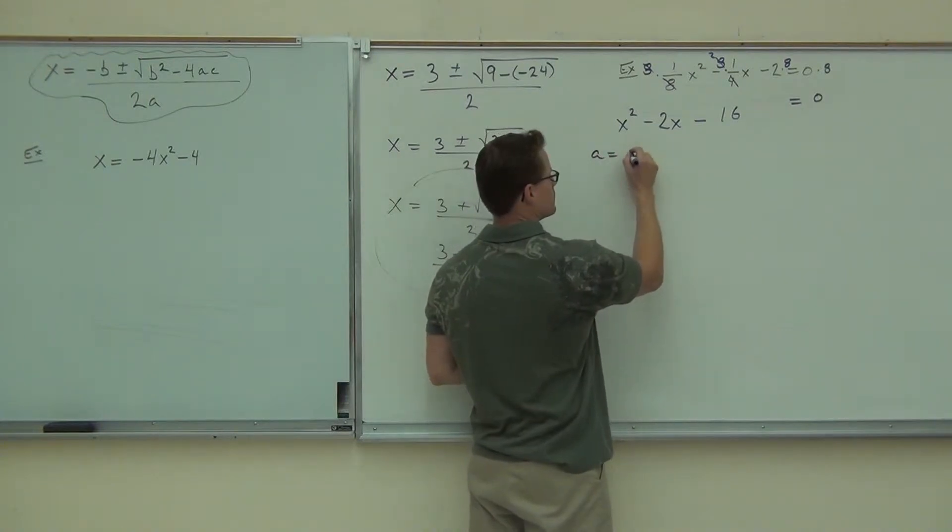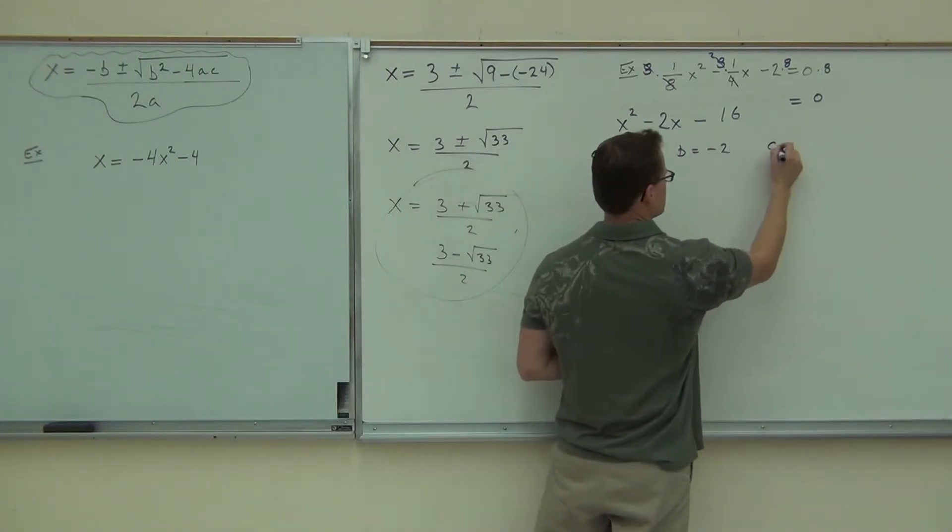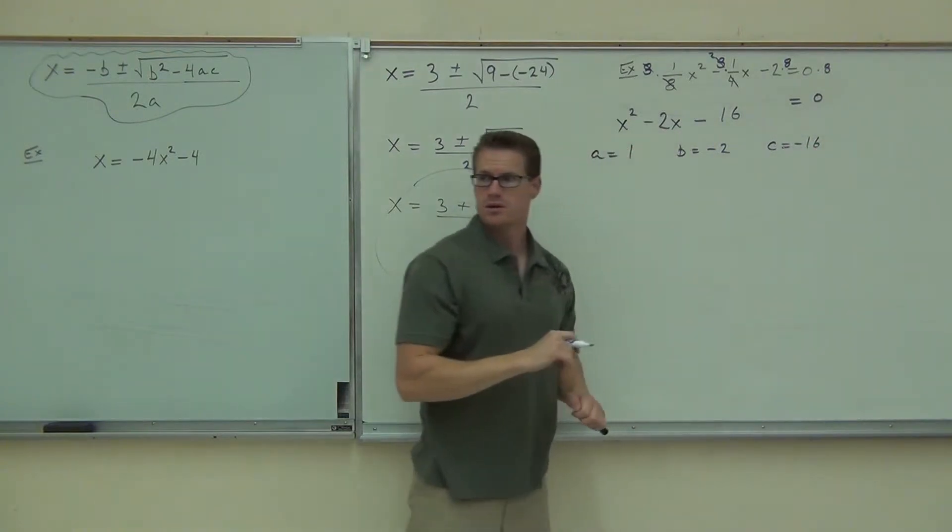A is? One. B is negative two. And C is negative 16. Did you make it that far, folks? Good deal.